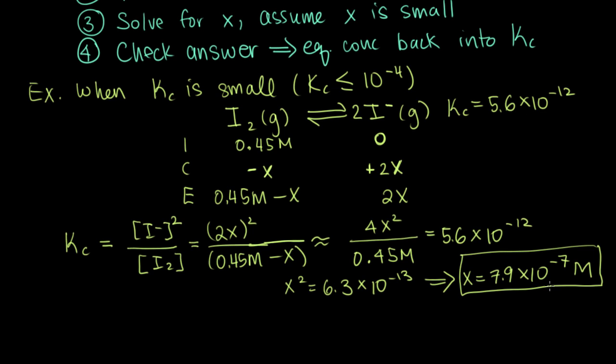It's about six orders of magnitude smaller than 0.45. So, so far so good. But we can make sure that it really is right by checking our answer. We can plug in our x and calculate kc again.